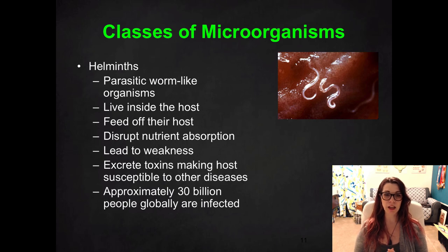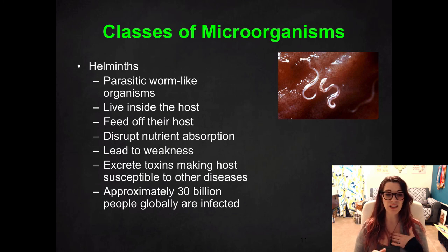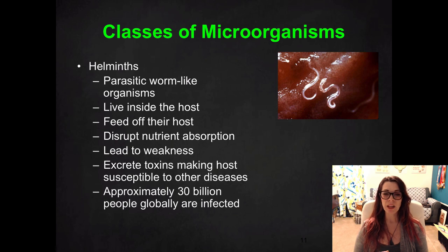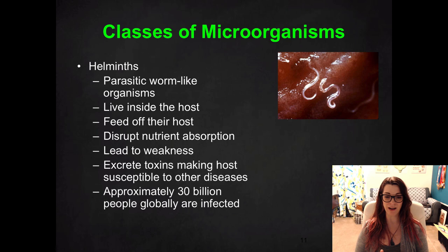The last category is helminths. Helminths are parasitic worm-like organisms — things like intestinal worms that live inside the host: inside you, your dog, or a pig, and they feed off the host directly. They might be stealing nutrients directly from you or actually feeding on your tissues. This disrupts your nutrition absorption and leads to the nutritional deficiencies and causes of disease we talked about last nine weeks. It leads to weakness, and these helminths excrete toxins which weaken your immune system and make you susceptible to other diseases. Approximately 30 billion people globally are infected with some type of parasitic worm, and a lot of people aren't even aware of their infection.